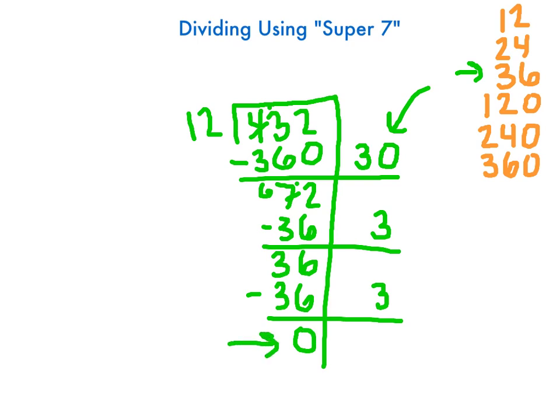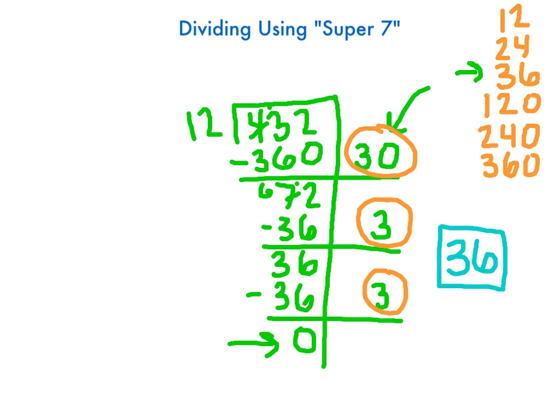This right here would be my remainder normally, but I don't have one. So you say, okay, I did all this. What do I do now? Well, all this stuff out next to the side, my 30, my 3, my 3. If I add those together, if I find the sum of those, that's going to give me my solution. So 30 plus 3 plus 3 is going to be 36. So my answer to 432 divided by 12 is going to be 36.